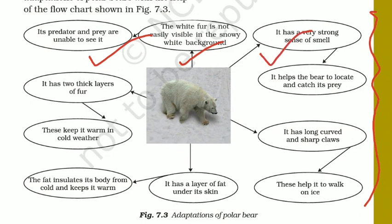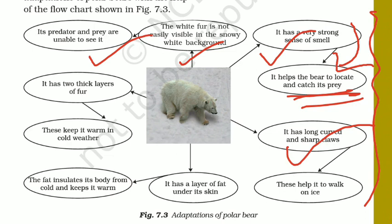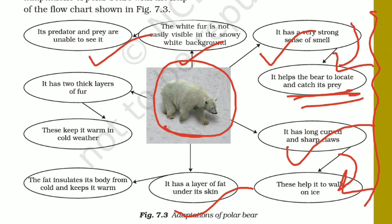Polar bears also have a very strong sense of smell, which helps them to locate and catch their prey. On the other hand, they have long, curved, and sharp claws that help them walk on ice very easily. Under the skin they have a very thick layer of fat. That fat insulates their body from the cold and keeps them warm. They also have two thick layers of fur that keep them warm in the cold weather.